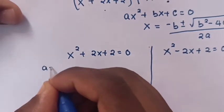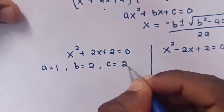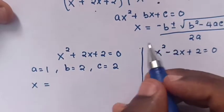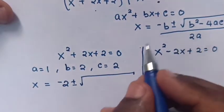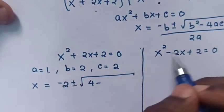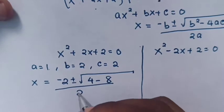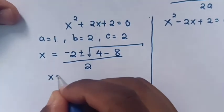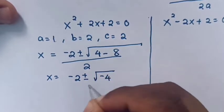Then from this equation, the value of a is 1, b is 2, and c is 2. So when these values are applied to the quadratic formula, x equals negative 2 plus or minus the square root of 2² which is 4, minus 4ac which is 4 times 1 times 2 giving minus 8, all over 2a which is 2. So x equals negative 2 plus or minus the square root of negative 4, divided by 2.